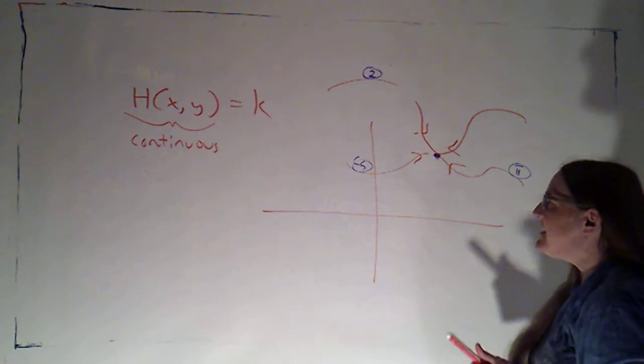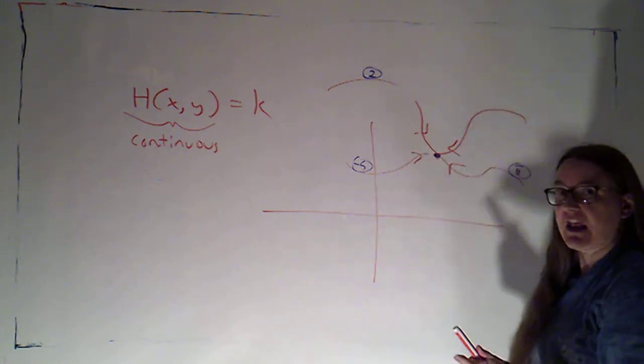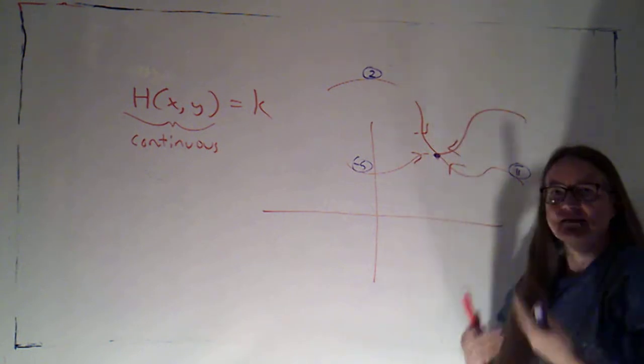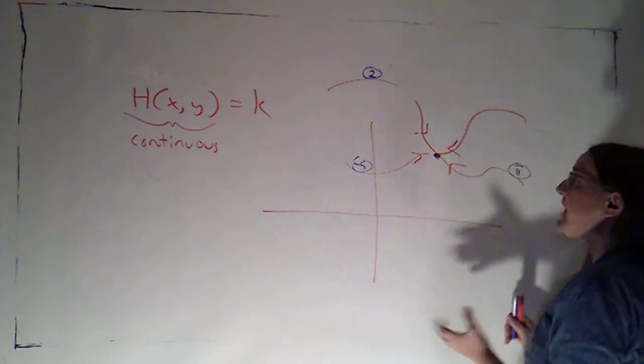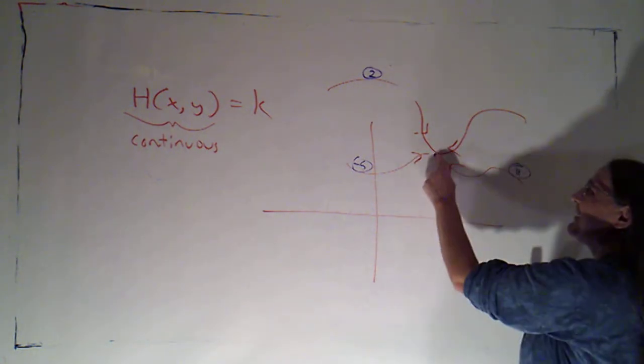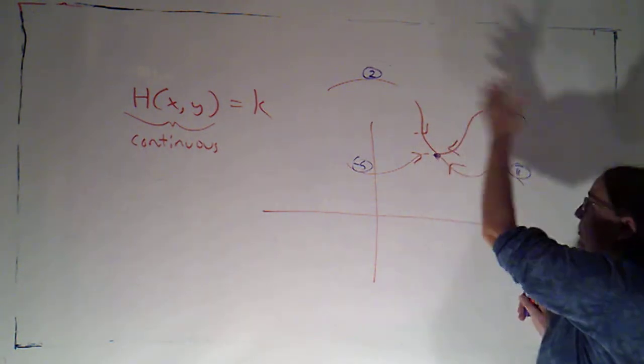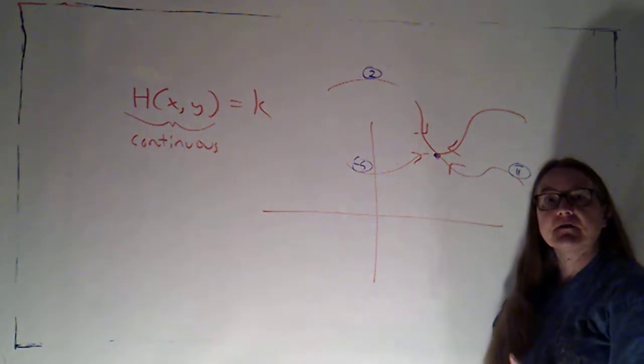It has to be, because this is a continuous function, it has to be the limit of the values that I get as I get arbitrarily close. But that limit won't exist because I can get arbitrarily close and have a value of h of 2 or negative 5 or pi or whatever these level curves are.